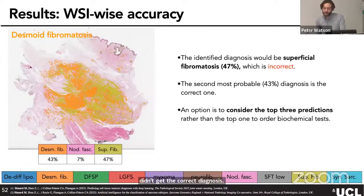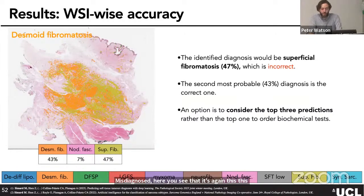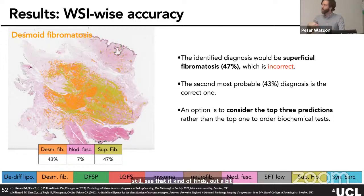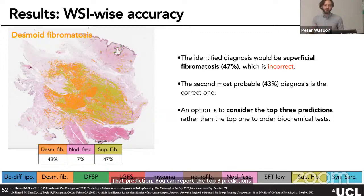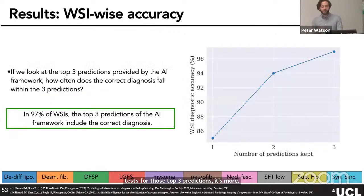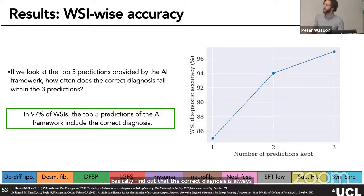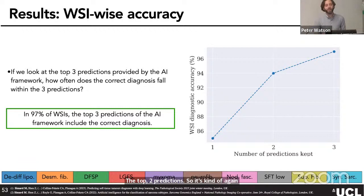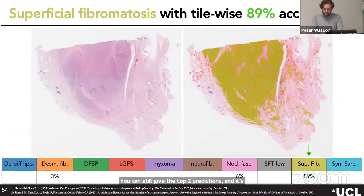Looking at a misdiagnosed example — a desmoid fibromatosis — the AI identified it as a different type with a slightly higher percentage, though it still found some signal for the correct diagnosis. One option is to report the top three predictions to the pathologist, suggesting they order tests for those three. When doing this, the correct diagnosis is found in the top three predictions in 97% of whole slide images, helping reduce the time to reach a diagnosis.